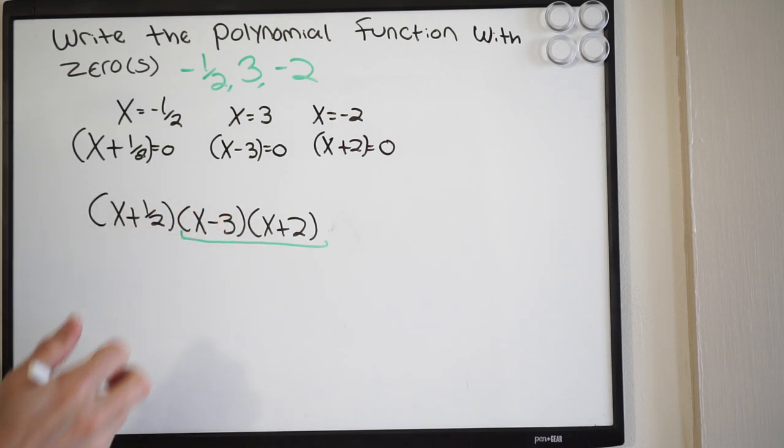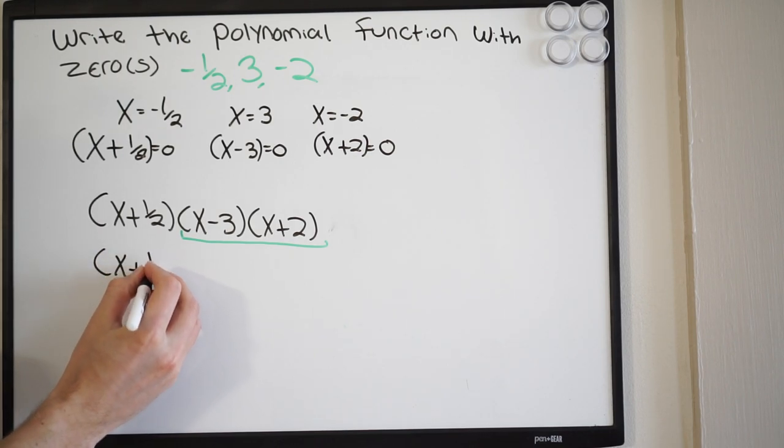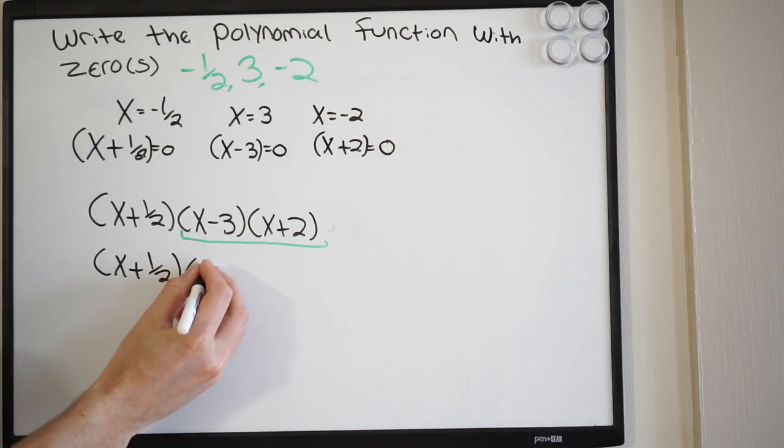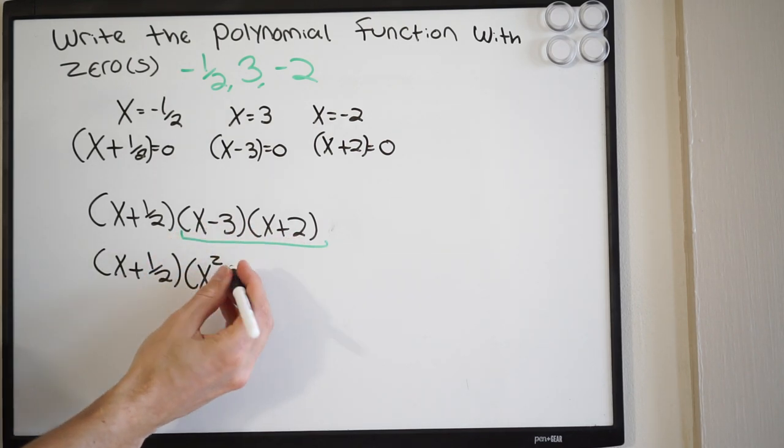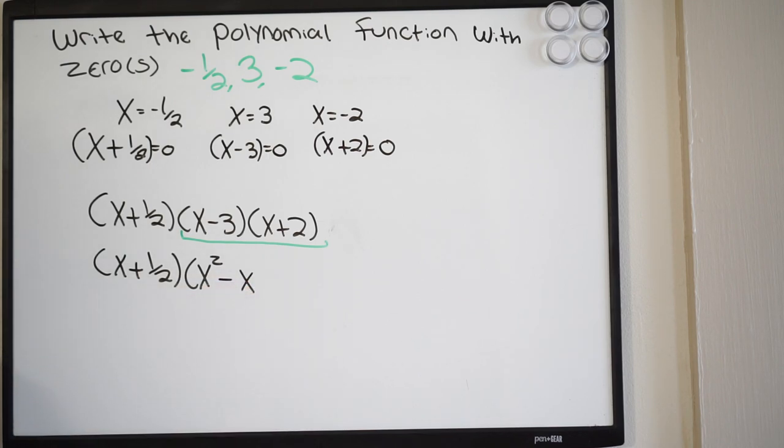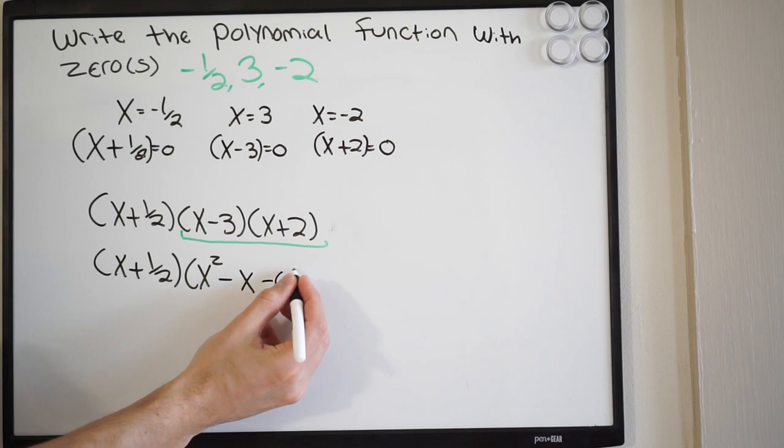So we're just going to do FOIL here. We'll do x times x, that's x squared. So I'm going to write it like this: x plus a half, and this will be x squared. Then we have x times 2, so 2x, negative 3x, so this becomes negative x. And then negative 3 times 2, that's negative 6.